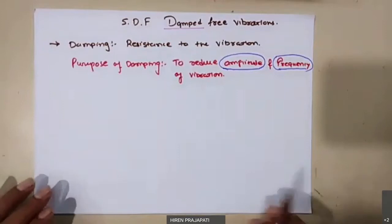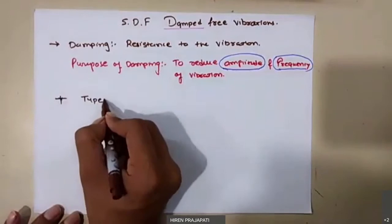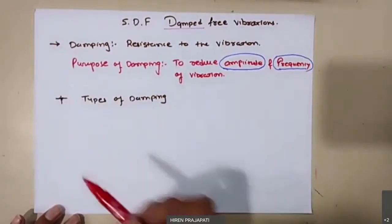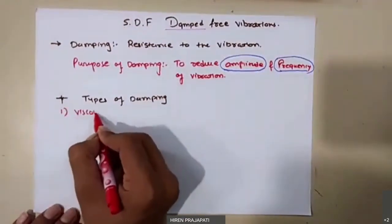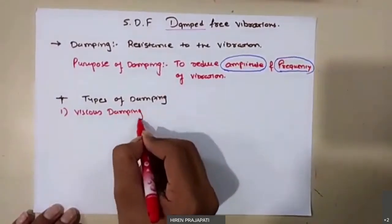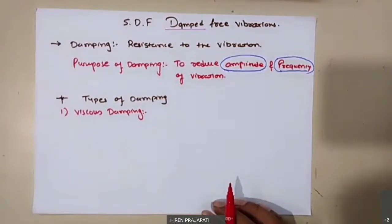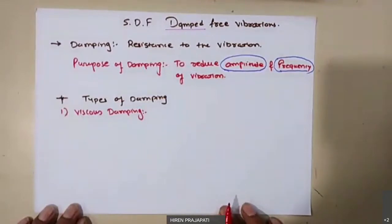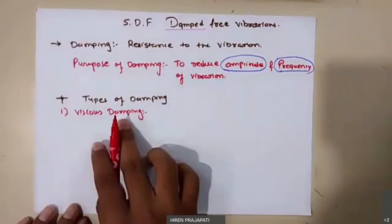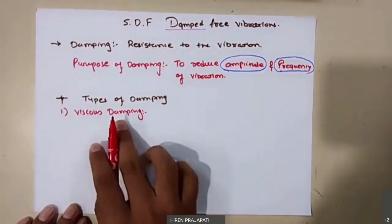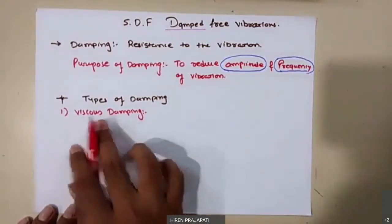Now, what are the types of damping? There are three types. The first is viscous damping — when the system is allowed to vibrate in a viscous medium, the viscosity of the fluid offers damping or resistance to the motion. If you allow any system to vibrate in a viscous medium, due to the viscosity of the fluid, we get reduction in the amplitude of vibration every time.